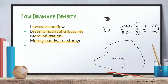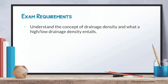Essentially, drainage density tells you how much water there is in a drainage basin in terms of how dense it is per unit area. You're dividing the drainage basin into sections to determine, based on one specific area, how much water flows through at one point in time. It's a very simple thing to understand — you just need to know the formula and when it produces a high or low number.